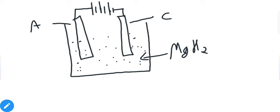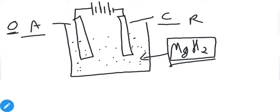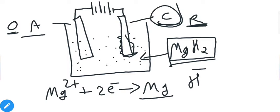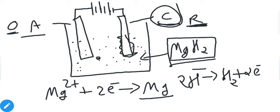When we electrolyze an ionic hydride such as MgH₂, a reduction reaction occurs at the cathode and an oxidation reaction at the anode. Mg²⁺ accepts two electrons and is reduced to magnesium metal, which deposits on the cathode surface. Meanwhile, H⁻ is in a negative ionic state, so 2H⁻ releases two electrons to produce H₂ gas. Bubbles of H₂ gas evolve at the anode, confirming the presence of hydrogen in the form of hydride.